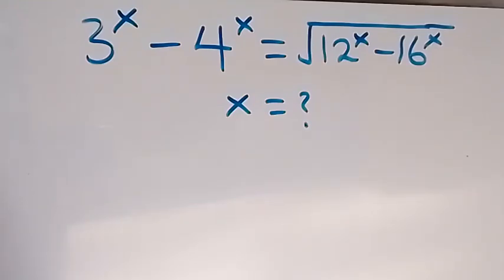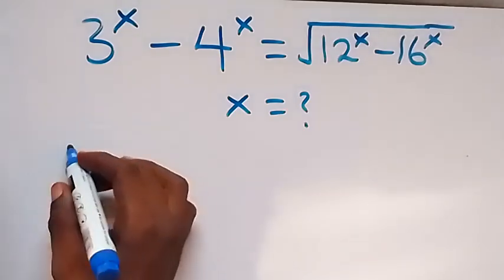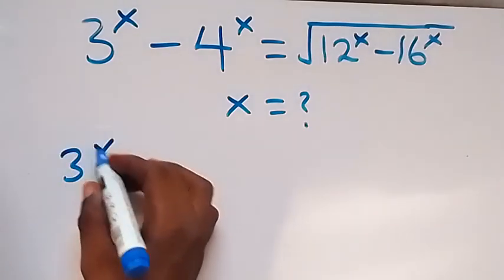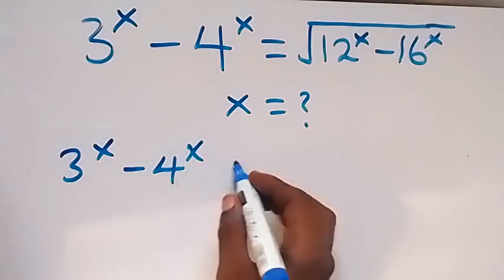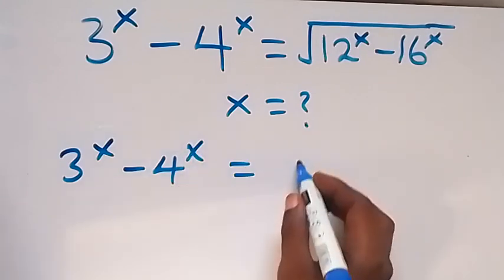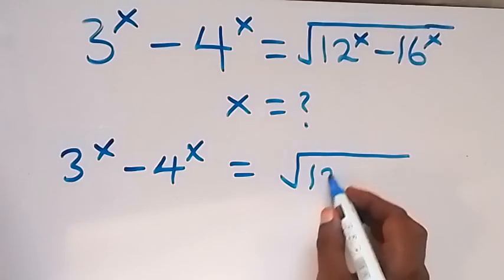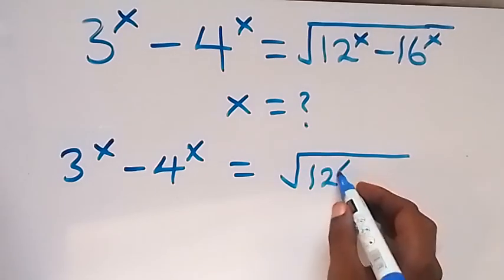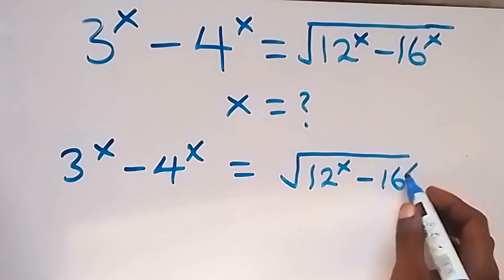Hello, you are welcome. How to solve this nice algebra equation — here we find the value of x. We are given 3 raised to power x minus 4 raised to power x equals to square root of 12 raised to power x minus 16 raised to power x.